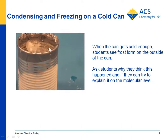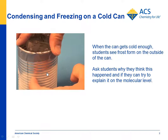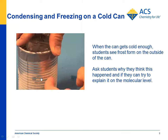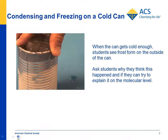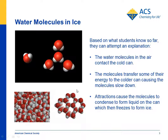After they stir the ice and salt, they'll realize that there's a little bit of moisture on the can and also there's frost or ice. The students should have some good ideas about what's going on here because they've already seen that water vapor condenses and turns to a liquid on the outside of a cold glass. So this is one step further — if it's really cold, it'll actually turn to ice.